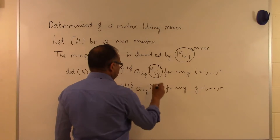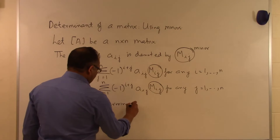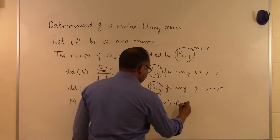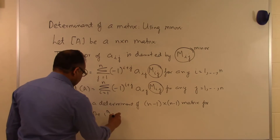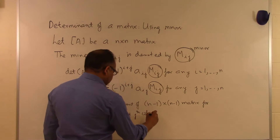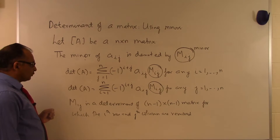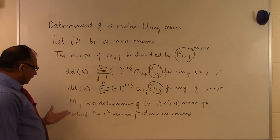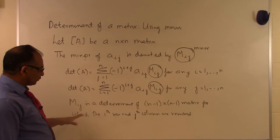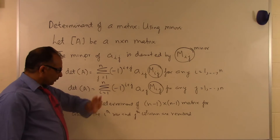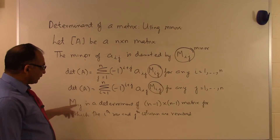The minor M_ij is itself a determinant — it is the determinant of the (n-1) by (n-1) matrix obtained by removing the i-th row and j-th column from A. For example, for element A_12 we find M_12 by deleting the first row and the second column, which leaves an (n-1) by (n-1) matrix whose determinant we then compute.